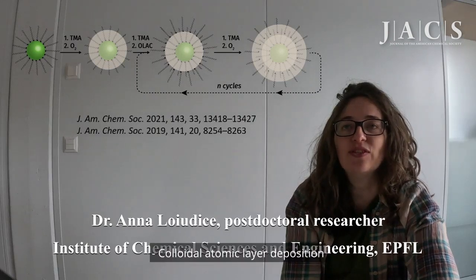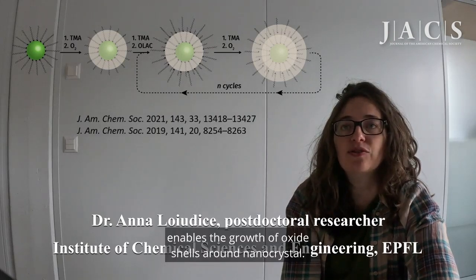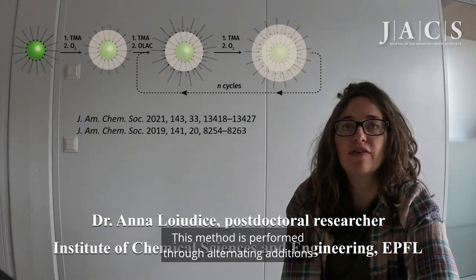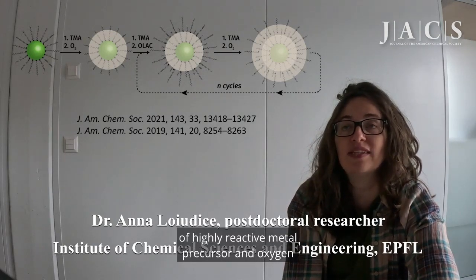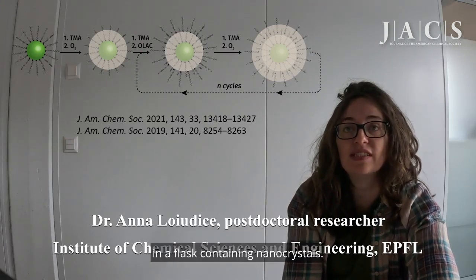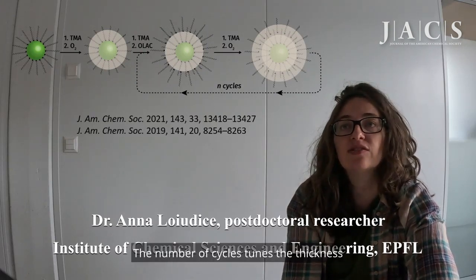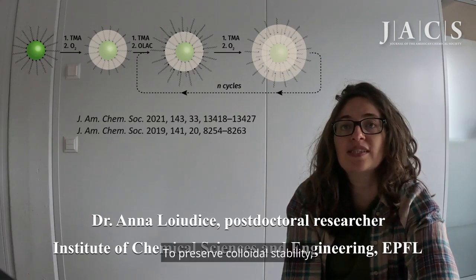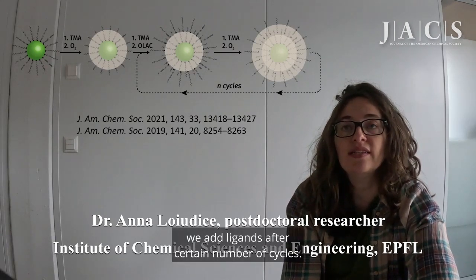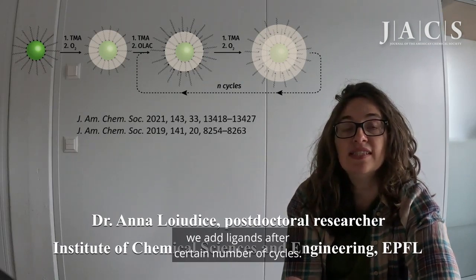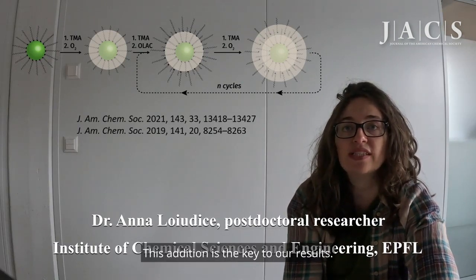Colloidal atomic layer deposition enables the growth of oxide shells around nanocrystals. This method is performed through alternating additions of highly reactive metal precursor and oxygen in a flask containing the nanocrystals. The number of cycles tunes the thickness of the oxide shell. To preserve colloidal stability, we add ligands after a certain number of cycles. This addition is the key to our results.